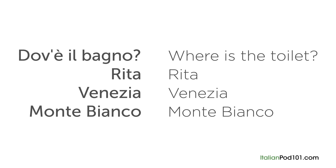Capital letters are only generally used at the beginning of a sentence or with proper nouns. A proper noun can be the name of a person, like Rita, but also the name of a place, like Venezia or Montevianco.